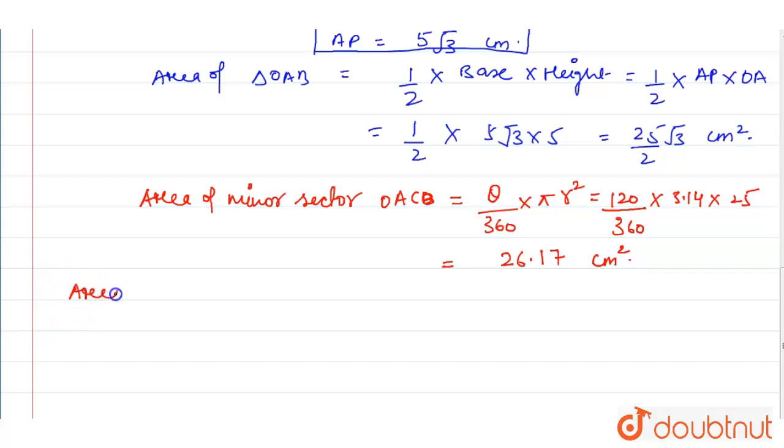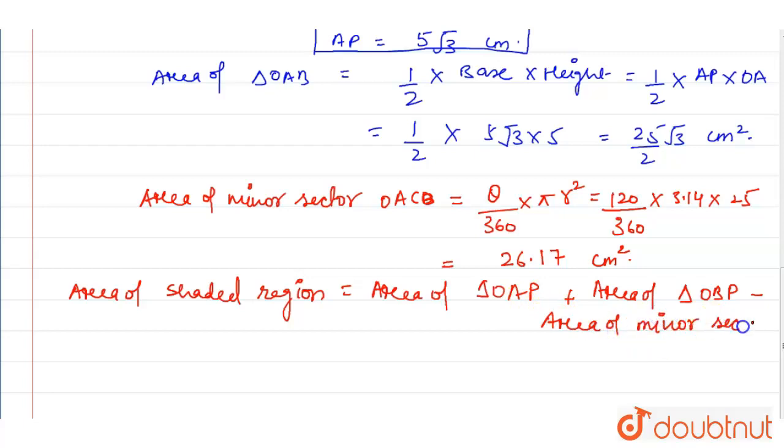Now we can calculate the area of shaded region by taking the area of triangle OAP plus area of triangle OBP minus area of minor sector. So area of triangle that was 25 divided by 2 root 3 plus 25 divided by 2 root 3 minus 26.17.